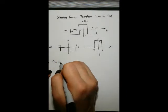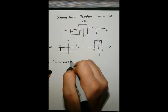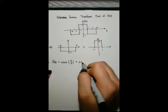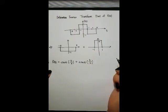Now writing f of t in terms of rectangular functions, we get negative rectangle t over 6 plus 2 rectangle t over 2.